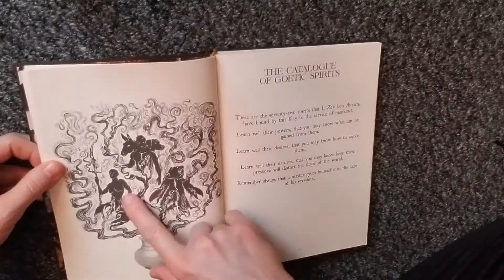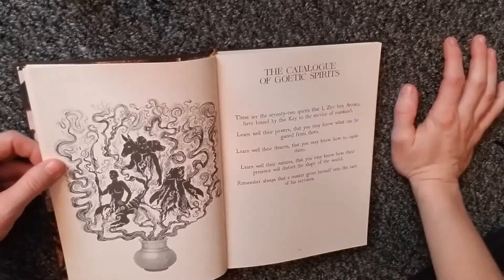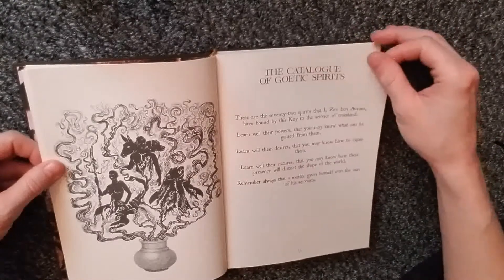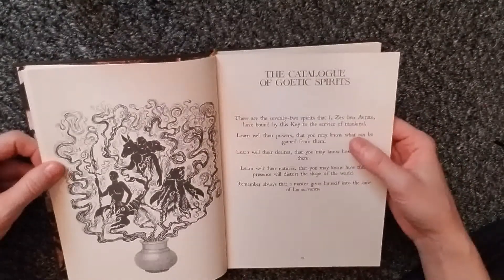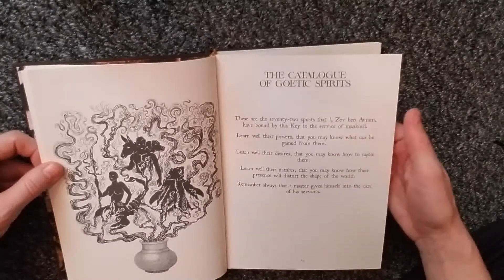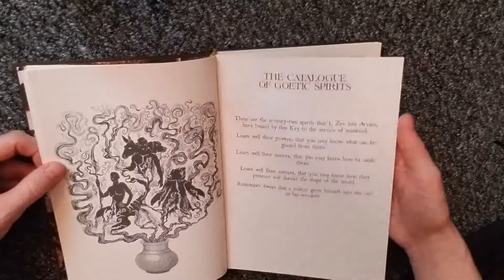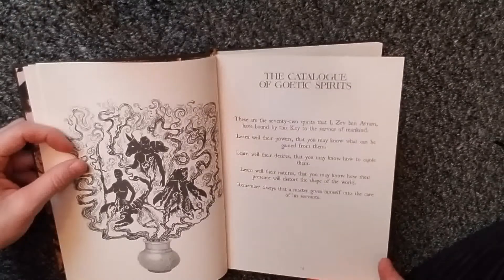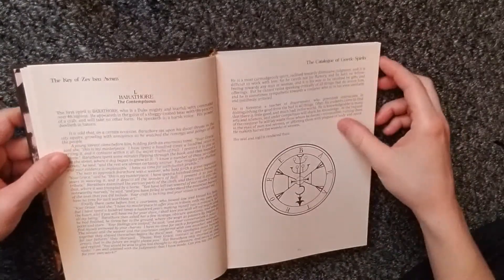That's cool. So there's a female, a dog, a bear, a bear with lobster claws. That reminds me of man bear pig from South Park. It's the first thing that popped in my head. These are the 72 spirits that I, Zev Ben Avram, have bound by this key to the service of mankind. Learn well their powers that you may know what can be gained from them. Learn well their desires. Remember always that a master gives himself into the care of his servants.